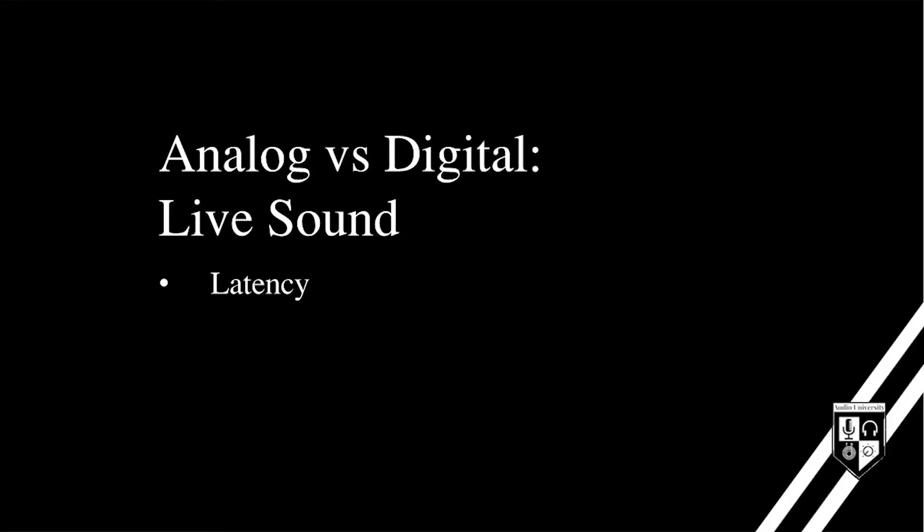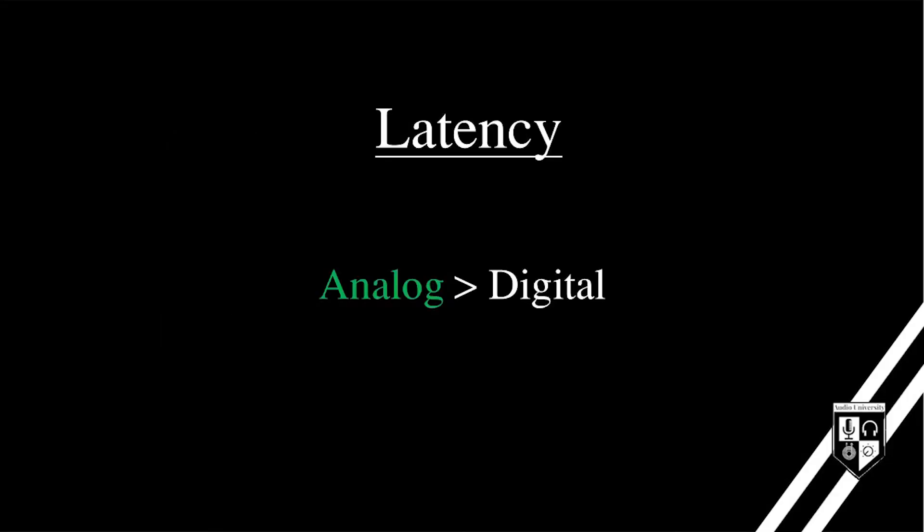The two main differences between analog and digital in live sound are latency and portability. Every digital system adds some bit of delay in the signal chain called latency. This can cause problems in the form of phase interference or, more commonly, monitoring issues. If a musician is monitoring themselves through headphones and there's a delay caused by the digital system, it can be very confusing to the musician.